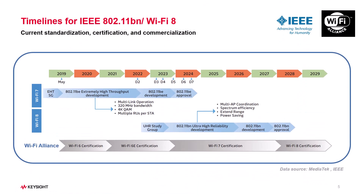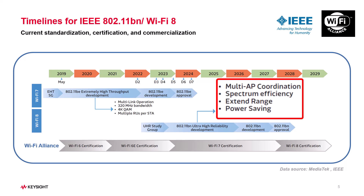Wi-Fi 8 is all about reliability. Wi-Fi 6 and 7 focused on speed, but Wi-Fi 8 is built for consistent, deterministic performance — perfect for XR, industrial automation, and eHealth. One of the biggest upgrades is smarter interference handling. It uses multiple AP coordination, better spectrum management, extended range, and improved power efficiency, all to ensure a smooth, reliable connection.